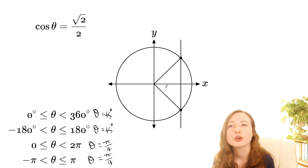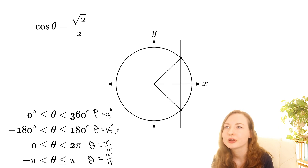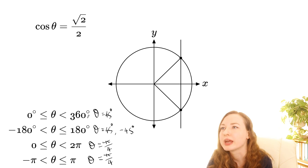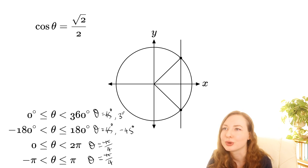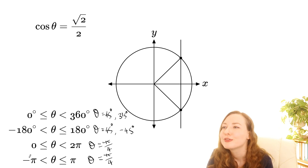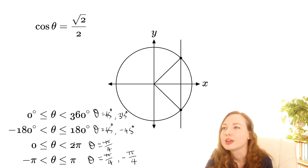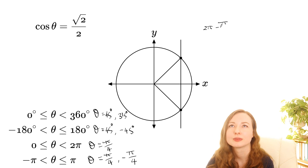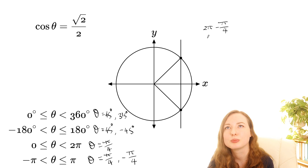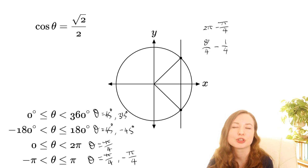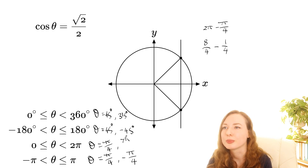Looking at the other intersection, you could call that negative 45, remembering that negative angles go in that direction. But if we're in the range 0 to 360, we can't say negative 45 because that's less than 0, so you add 360 to get 315 degrees — that's kind of like going around 360 and then back 45. For the range negative pi to pi, call it negative pi on 4. For the range 0 to 2 pi, think of it as 2 pi minus pi on 4, which is 8 on 4 minus 1 on 4, making 7 pi on 4.